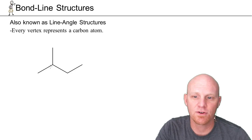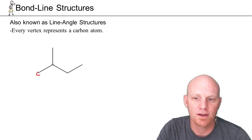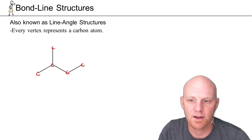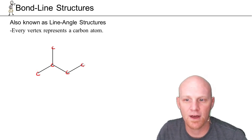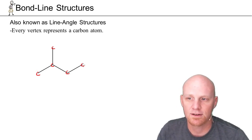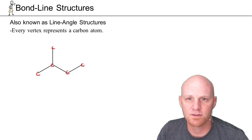The way this works is any vertex in a molecule that is not labeled is by default a carbon atom. So everything I'm labeling here, those are all carbon atoms. They're vertices in the structure — not labeled, they're carbon. That's the first part of the rule.